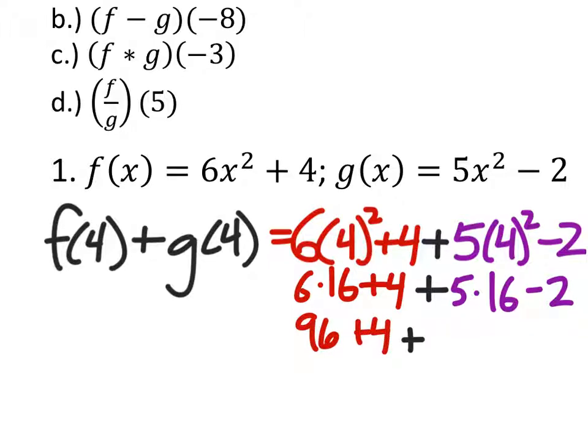So, four squared is 16. So, I got six times 16 plus four plus five times 16 minus two. Six times 16 is 96, plus four. Five times 16 is 80. That sounds good to me. And so, when I combine all this stuff, which hopefully you're using a calculator to do so you don't make mistakes like I probably will, 178.